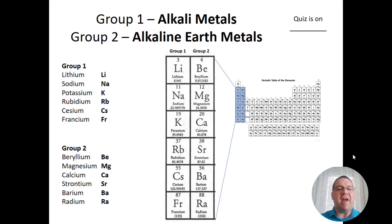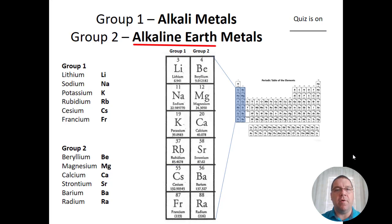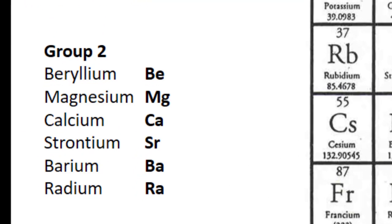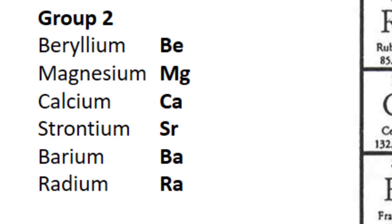If we go one column over to Group 2, we have the alkaline earth metals. An easy way to remember alkali versus alkaline earth: alkali has only one word in the name, so that's Group 1; alkaline earth has two words in the name, so that's Group 2. Up at the top we start with beryllium, Be — watch the double L in the spelling of beryllium — and then you have magnesium, Mg, which can be easily confused with an element we'll see in the next grouping, the transition metals.